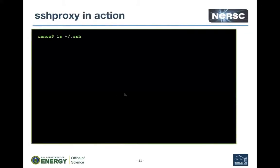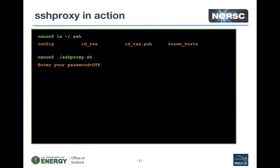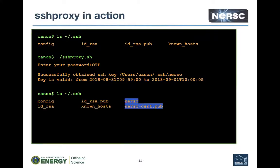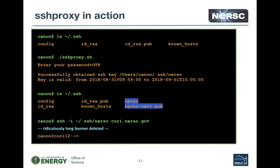Here's what it looks like in action. In my dot-ssh directory on my laptop you can see the normal files — there's no NERSC key at this moment. I run the SSH proxy script, it prompts me for my password and OTP, I enter it, and it tells me it's created a new key. Now I can see the new files in that directory. I can then use those to connect into Cori, for example, and everything is as normal after that. That certificate would work for 24 hours.